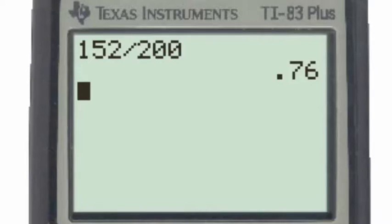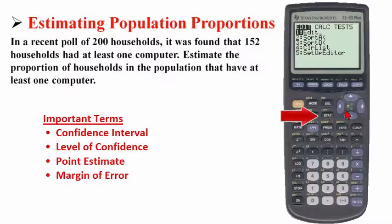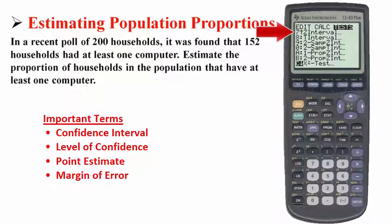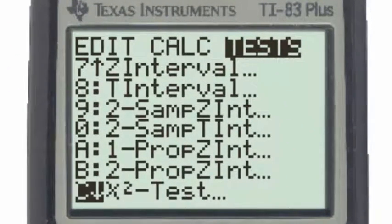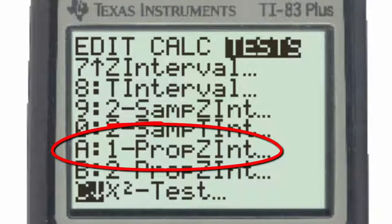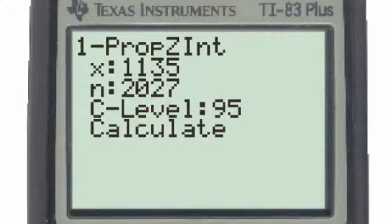In this problem, to do that using the TI-83, we'll use the one proportion z-interval, which is found under the stat button, then the test menu. If you scroll down the test menu until you put the number seven on top, you see that you're looking at six different intervals which can be found with the TI-83. Since we want to find the interval about a population proportion and we're talking about only one population, we'll use the one proportion z-interval.